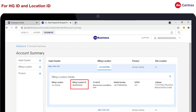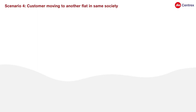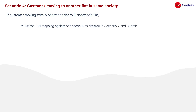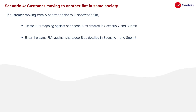Scenario 4: Customer moving to another flat in the same Society. If a customer is moving from a shortcode A flat to a shortcode B flat, then: Step 1 — delete the FLN mapping against shortcode A as detailed in Scenario 2 and submit. Step 2 — enter the same FLN against shortcode B as detailed in Scenario 1 and submit.